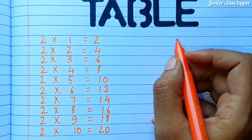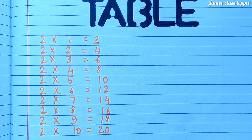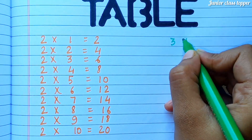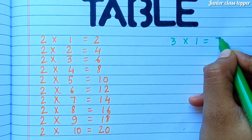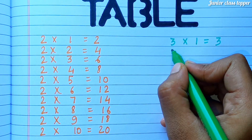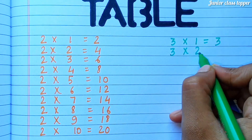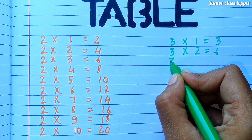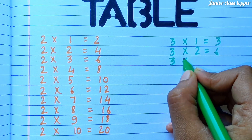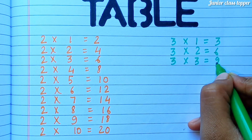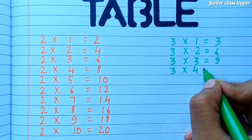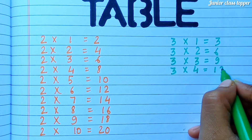Table of 3. 3 1s are 3. 3 2s are 6. 3 3s are 9. 3 4s are 12.